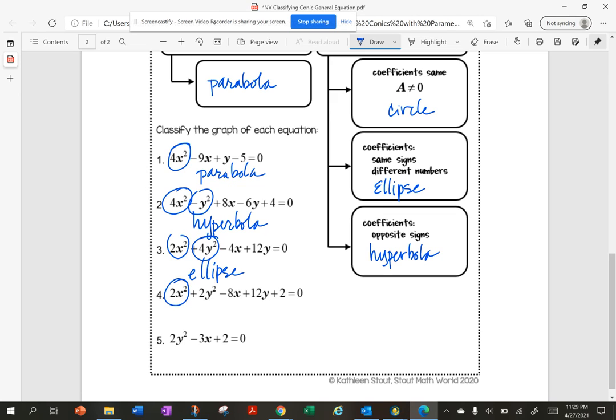Number four, they're the same sign, so I have a circle. And number five, I just have one squared term, so I have a parabola.